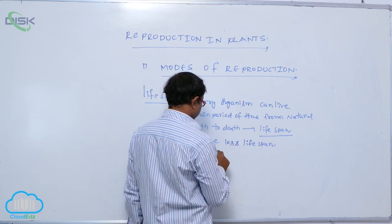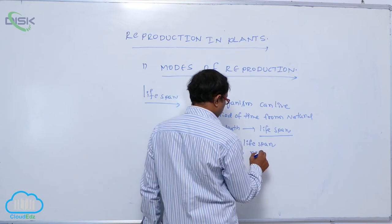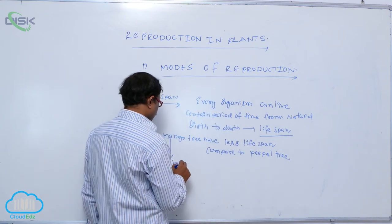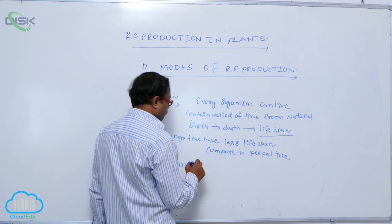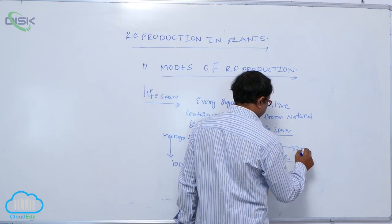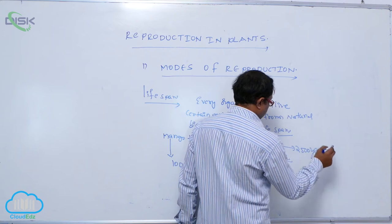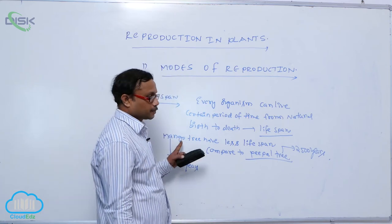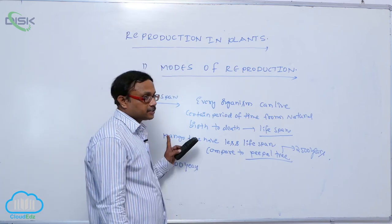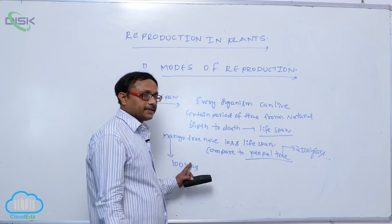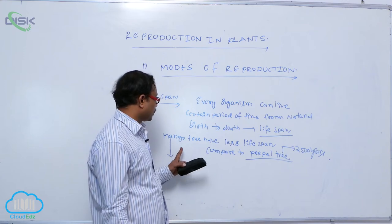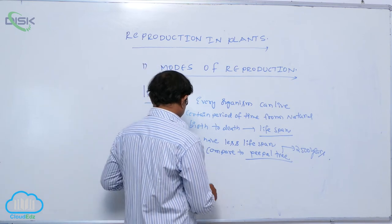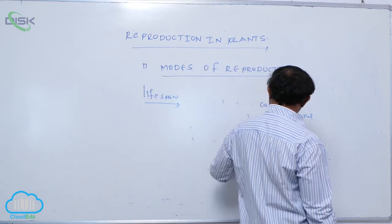For example, the mango tree has a life span of only 100 years, compared to the peepal tree, which has a life span of 2,500 years. So every organism can live a certain period of time from natural birth to death. Life span differs from one organism to another — some have less, some have higher life spans.